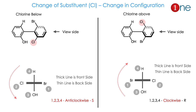Change of substitution can change the configuration. Here I give the compound where chlorine is below in one case and chlorine is above in the other. If you look at the viewing side, the positions are changing, and that's why you have a change in configuration. In the first one, chlorine is on the left side; in the second one, chlorine is on the right side. This interchanges the configuration from anti-clockwise to clockwise. The same rule applies: thick line is front side, thin line is back side. The orientation of the left one is S, the right one is R. So change of substitution results in a change in configuration.